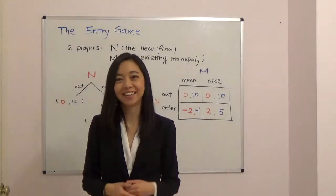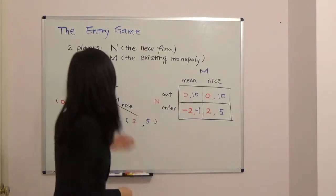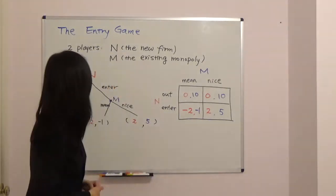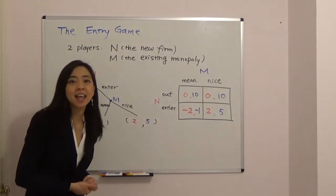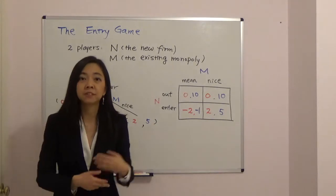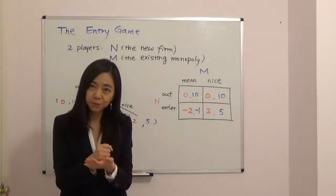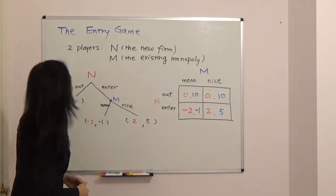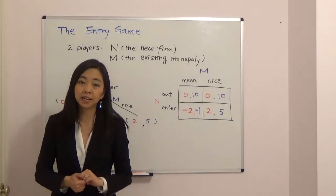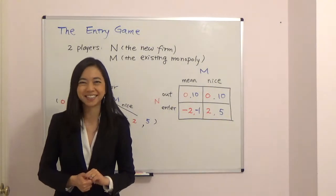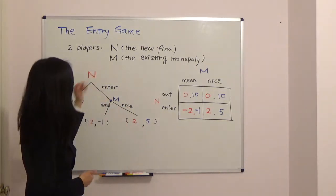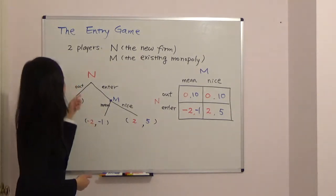Hello everyone, my name is Iris Franz and today we're going to talk about the entry game. In this game we have two players: the new firm and the existing monopoly. This game is sequential, meaning we have a first mover and a second mover. The first mover is the new firm, which is going to choose whether it's going to enter this market or not.